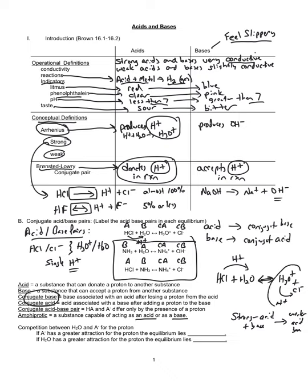Consider that the weaker acid and base can't donate the proton as easily, so that reaction doesn't occur as often. If the conjugate base has a greater attraction for the proton (A⁻), the reaction will shift or lie farther to the left. If water has a greater attraction for the proton, it will shift to the right. So if water has a greater attraction for the proton than Cl⁻, which is the case in this example, the reaction shifts further to the right.